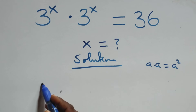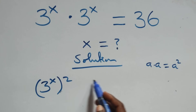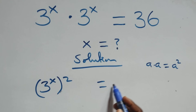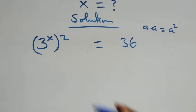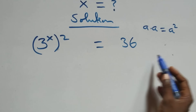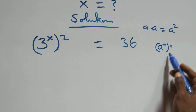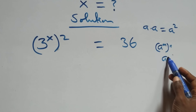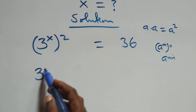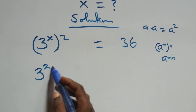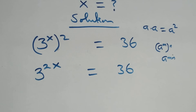We can write this as 3 raised to power x, squared, equals to 36 on this side. This also follows when we have a raised to power n, raised to power n, which is the same thing as a raised to power n·n — the powers are multiplied. So we have 3 raised to power 2x equals to 36.